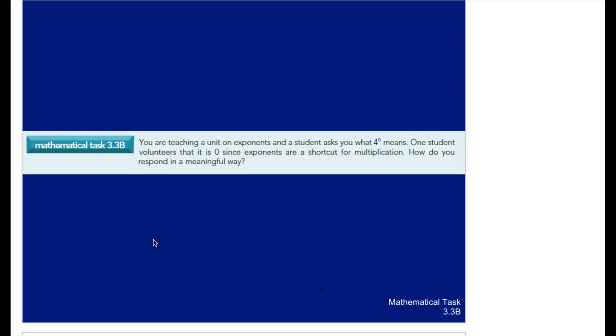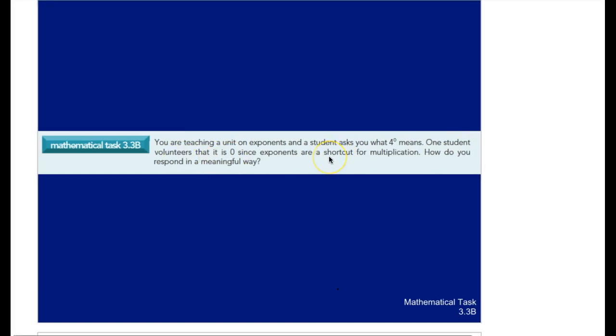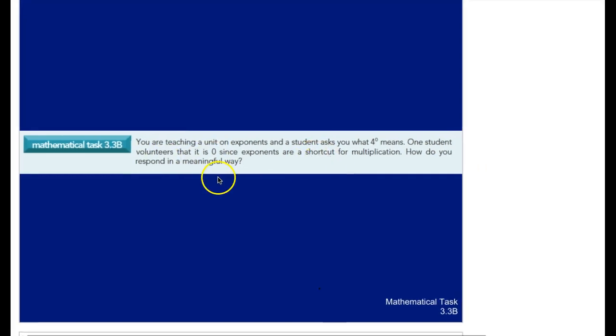Imagine this question here. You're teaching a unit on exponents and a student asks you what 4 to the power of 0 means. One student says that it's 0 since exponents are shortcut for multiplication. How do you respond in a meaningful way?